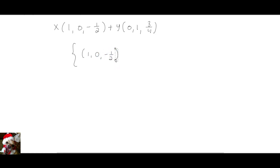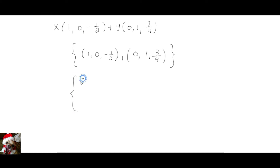This first vector is obtained when I let x equal 1 and y equal 0. This second vector is obtained when I let y equal 1 and x equal 0. That is the answer. However, this is also the answer — you can choose whichever of these two forms works best for you. They are the same vectors but in column form.